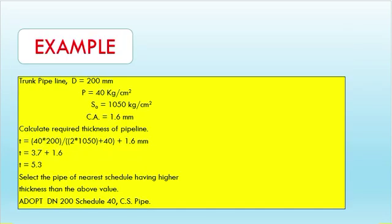One example shown here: a trunk pipeline with 200 mm diameter and P equal to 40 kg/cm². All values — D, P, SA, and C — are provided, and from these you can calculate the pipe thickness.